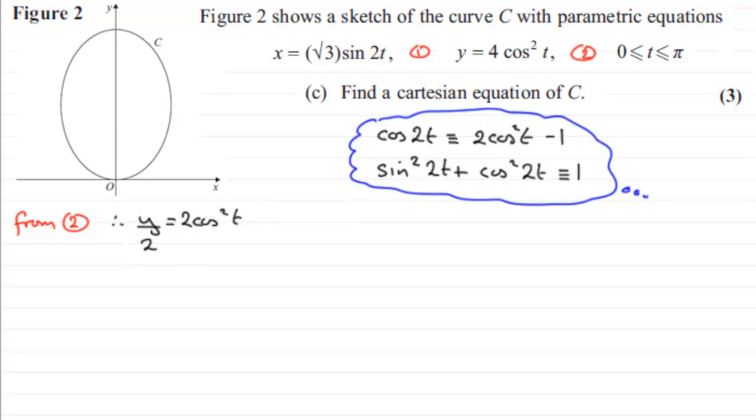But I know that from this identity—if I rearrange this identity and add one to both sides, I can see that 2 cos squared t is identical to 1 plus cos 2t.